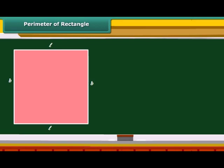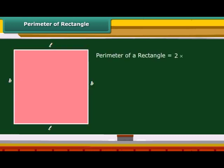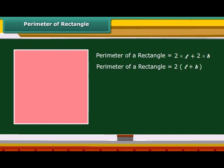Let us now calculate the perimeter of a rectangle. A rectangle is a four-sided geometric figure whose opposite sides are equal. Therefore, the perimeter of a rectangle is twice its length plus twice its breadth. We can rearrange this and say that the perimeter of a rectangle is twice the sum of its length and breadth.